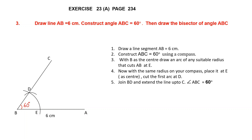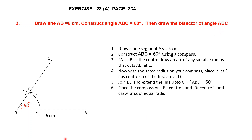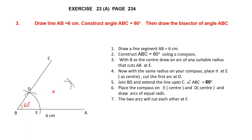We have finished constructing an angle of 60 degrees — the first part of the question. Now let's bisect this angle. Place the compass needle on E and draw an arc. Then place it on D and cut that arc. First we place it on E and draw an arc, then place it on D and cut that arc. The two arcs will cut each other at point F. Now join BF — we've got point F and we've joined BF.